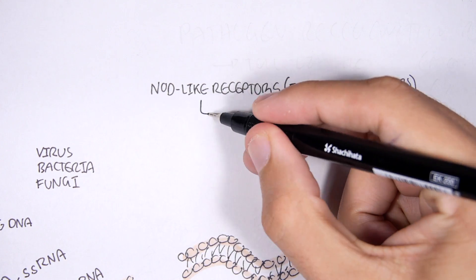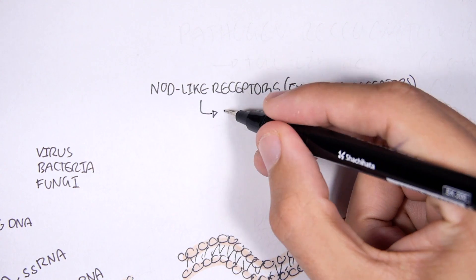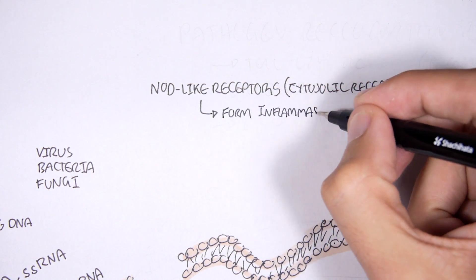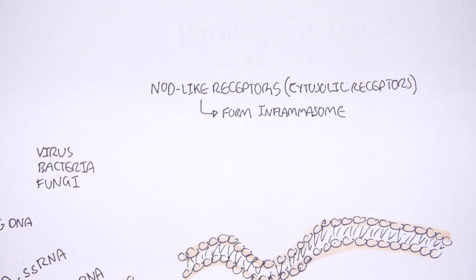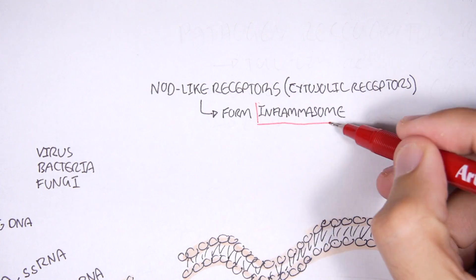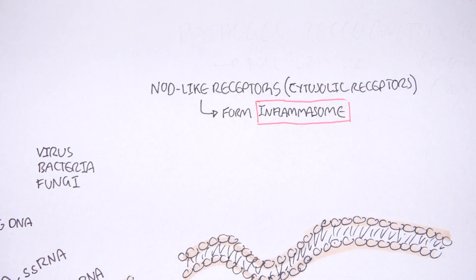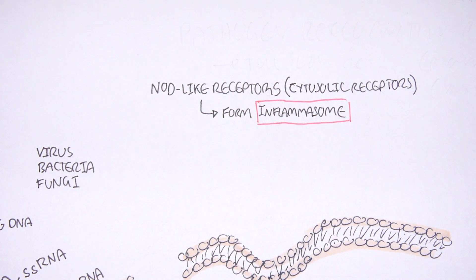NOD-like receptors are also the receptors involved in forming inflammasomes, which are protein complexes that amplify the immune response as well as induce apoptosis. So let's have a look at NOD-like receptors found within the cell.